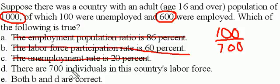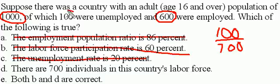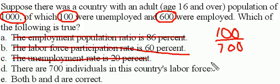D says there are 700 individuals in this country's labor force. We already answered that question — yes, there were 100 that are unemployed and 600 that were employed, so that's 700 and that's the right answer. And of course, B and D can't both be correct.